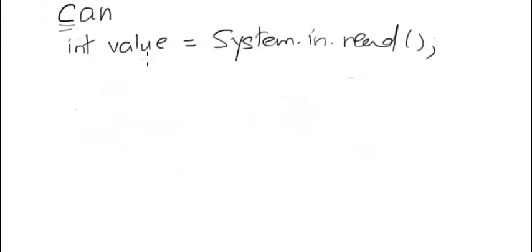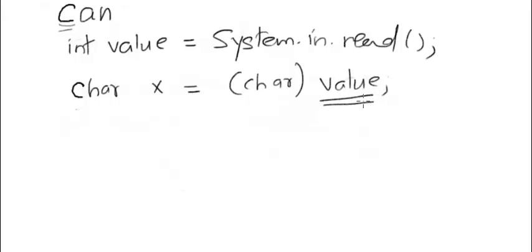This statement here reads the number 99 into value for character C. Now, to convert this to a character so we can view the bit sequence as the letter C, we write char x equals char value. That is, we are asking Java to take the value in this variable, which is 99, and view it as a character, and store the result in this variable x.